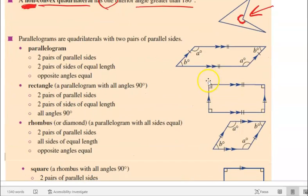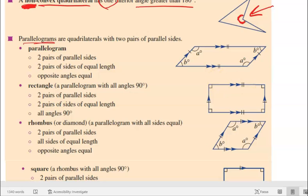A quadrilateral has four sides, but there are lots of different types. Parallelograms are quadrilaterals — they have four sides and two pairs of parallel sides.